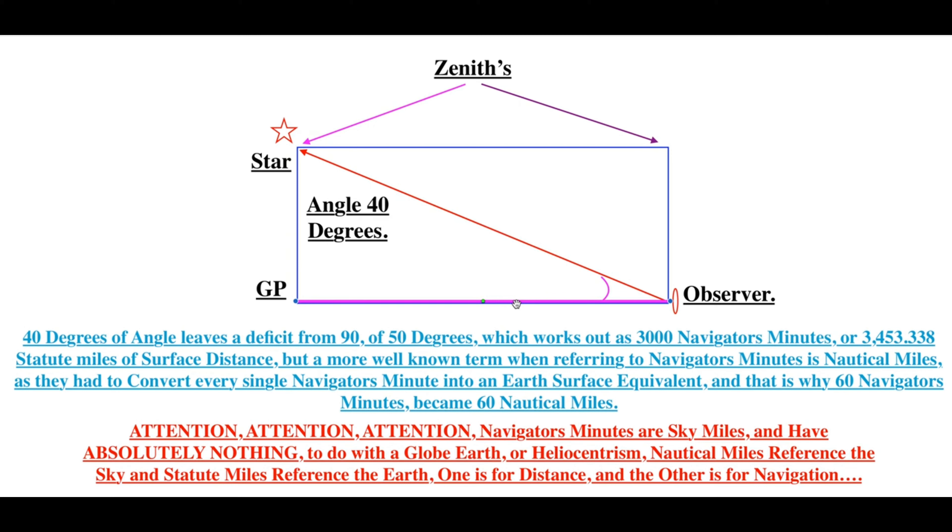Statute miles are surface-based measurement. Whereas nautical miles, or a better term form, navigator's minutes, are a sky-based navigation distance.